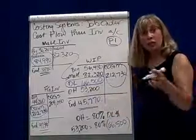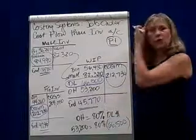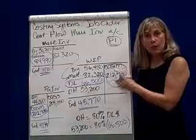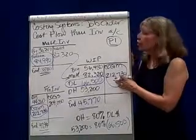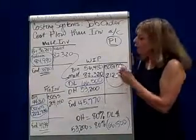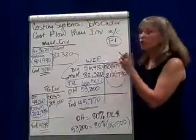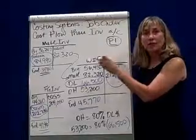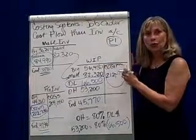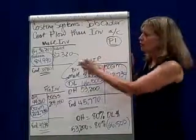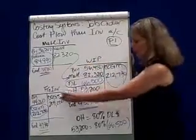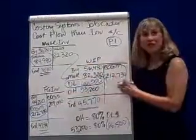Hopefully your math agrees with mine. As you can see, once more we're going through what items show up as debits and credits in the three inventory accounts: material inventory, work in process, and finished goods.